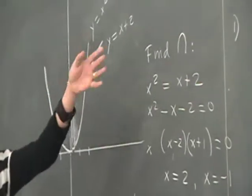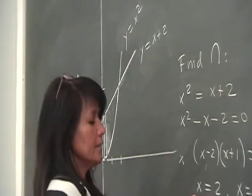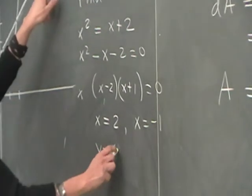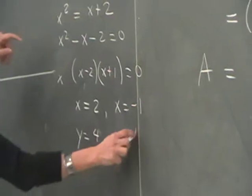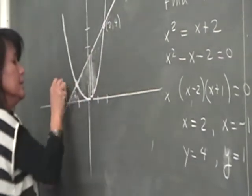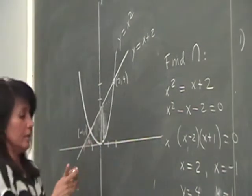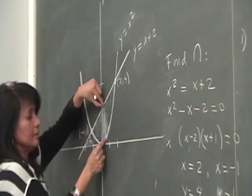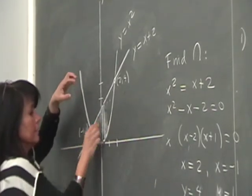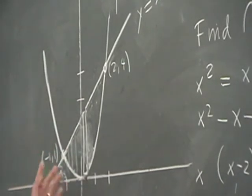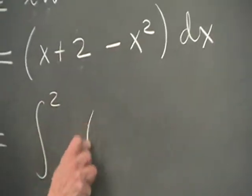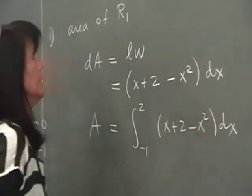We can also get the y-coordinates. When x is 2, substituting into either equation gives y equals 4. When x is negative 1, y equals 1. So the intersection points are (2, 4) and (−1, 1). Therefore, the area of region 1 is the integral from negative 1 to 2 of (x + 2 − x²) dx.